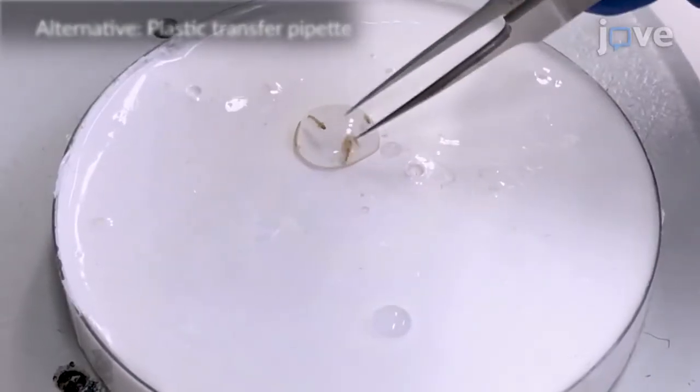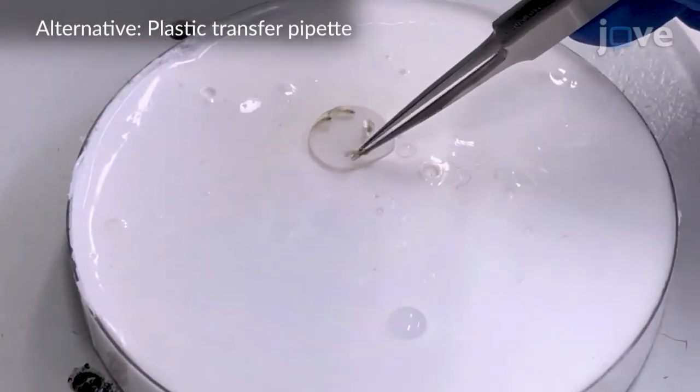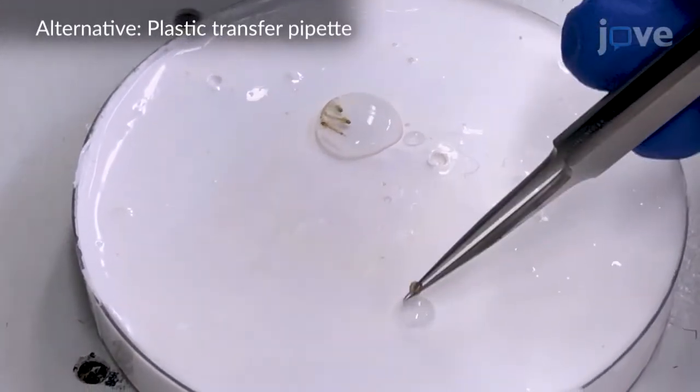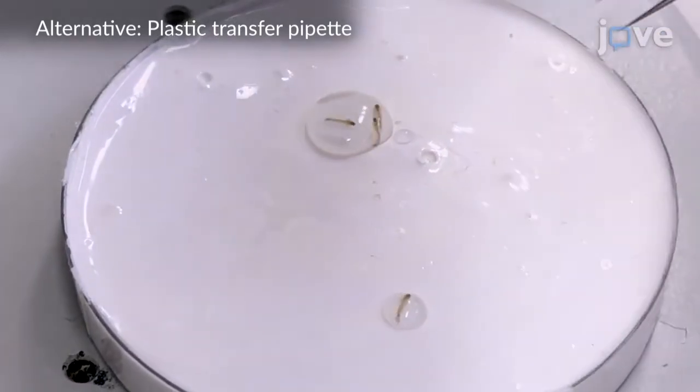Use forceps to place one L4 larvae into the dissection solution drop of 25% ethanol.